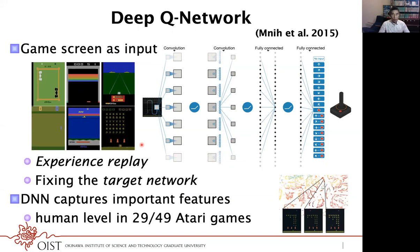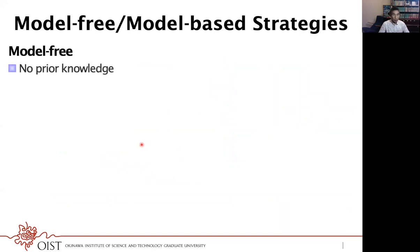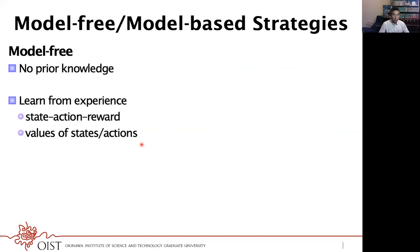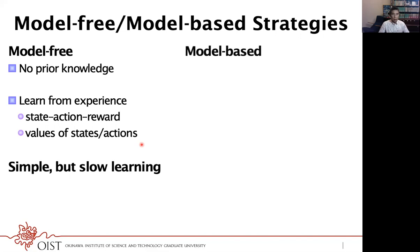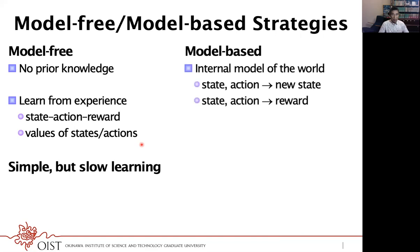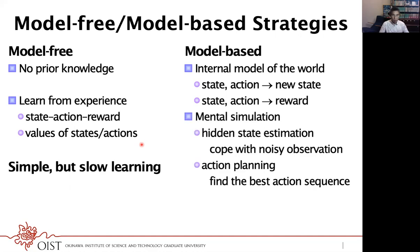This deep neural network takes a model-free framework, which requires no prior knowledge and learns just from the state-action-reward sequence using action value functions. This is a very simple algorithm, but learning can take many trials. Another strategy is model-based, in which the agent learns an internal model like a state transition function and reward function. You can then use simulation to speed up learning. Such an internal model is helpful for identifying the current state even under noisy observation and allows flexible adaptation, but the computational load is very high.